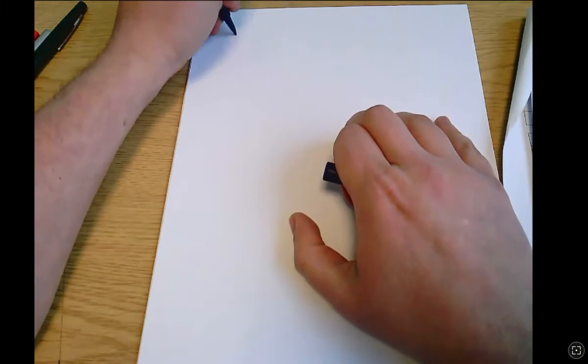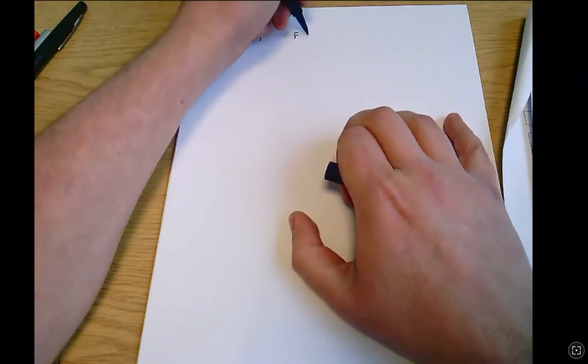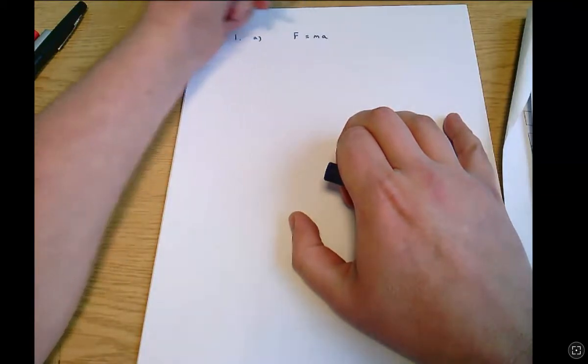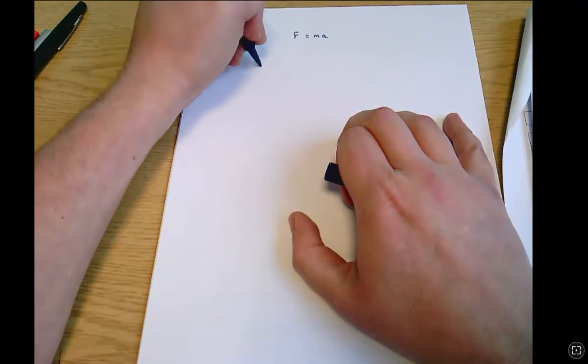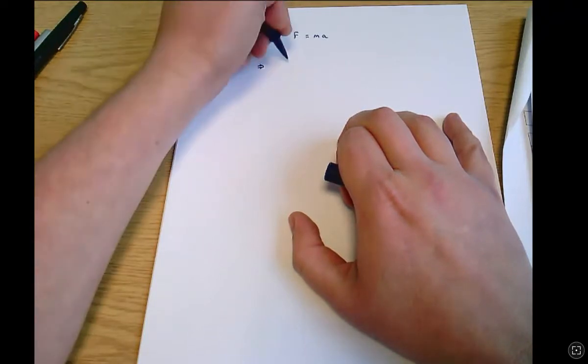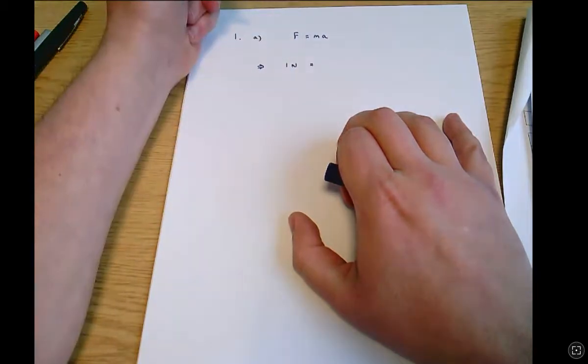What I would do for that is to start out by writing down the equation from the question which is given as f equals ma and then what we need to say is that tells us that the units on the left-hand side of the equation must equal the units on the right-hand side of the equation.